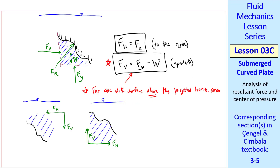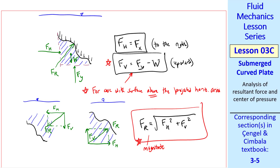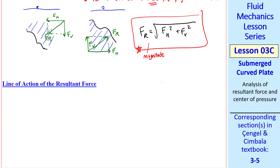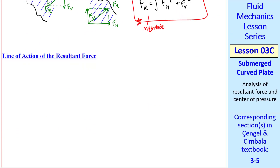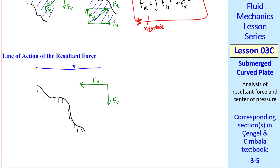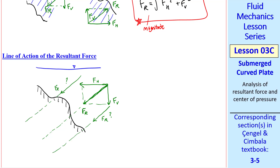For either case, once we've defined the magnitudes and directions of the horizontal and vertical forces, we use vector summation to find the resultant force. Namely, the resultant force is the square root of Fh² + Fv². This is just the magnitude of the resultant force. We also need to calculate the line of action of this resultant force — once we've calculated Fh, Fv, and the magnitude, we may want to know where it acts. For an arbitrary shape, you're going to have to integrate.